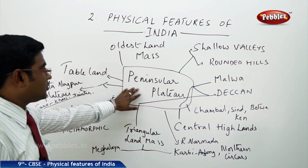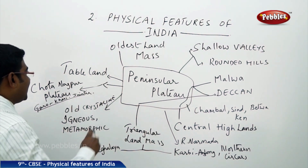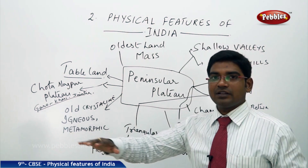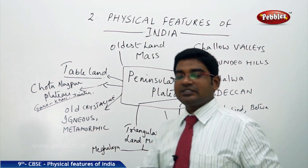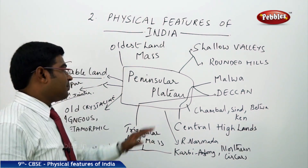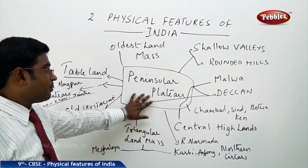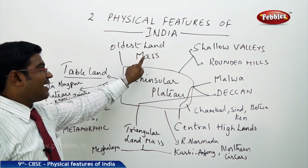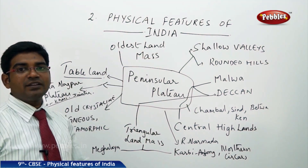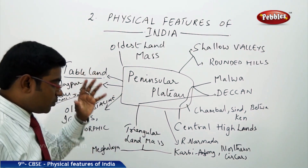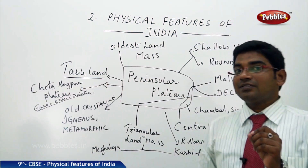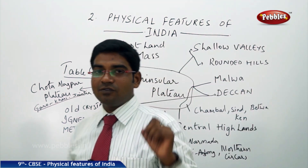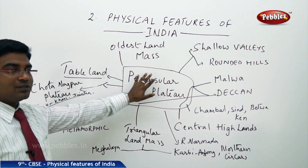The Peninsular Plateau is a plateau which is like a table land — where land is very flat and a larger area is at the same level. The Peninsular Plateau is one of the oldest land masses present in India. When we looked at the Himalayas, those are the youngest folded mountains. In a similar way, the Peninsular Plateau is the oldest land mass.